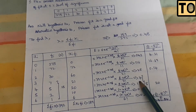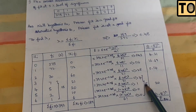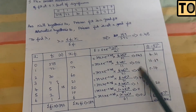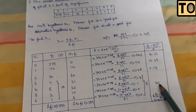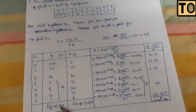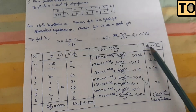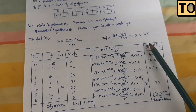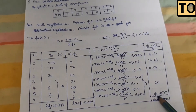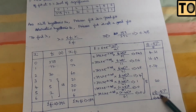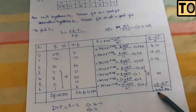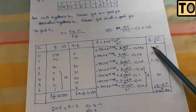Now add the total expected frequencies and compute the chi-square statistic. The calculation is: (O minus E) squared divided by E, summed across all categories. For example, (275 minus 243) squared divided by 243 is one such term. This gives the calculated chi-square value for the Poisson distribution.